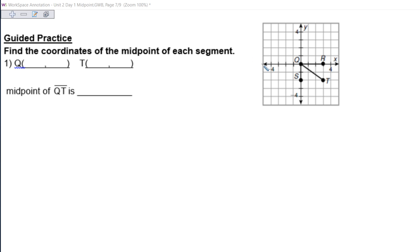But first we need the coordinates of endpoints. So we need the coordinates of Q and of T. And the coordinate for Q is the origin, which means it's 0, 0.